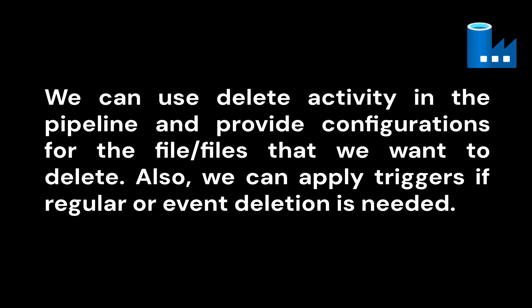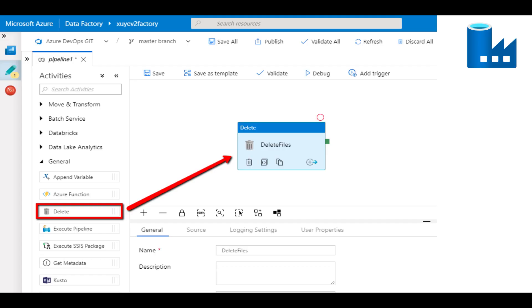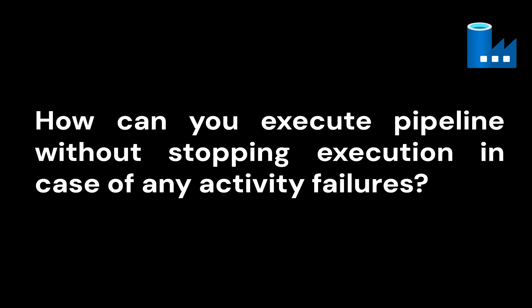Moving on to the third question: how can you execute a pipeline without stopping the execution in case of any activity failures? Let's say you have a pipeline with multiple activities — Activity 1, 2, and 3. Even if Activity 2 fails, you don't want to fail the pipeline. How can you actually do that? If you know the answer, pause this video and put it in the comment section.